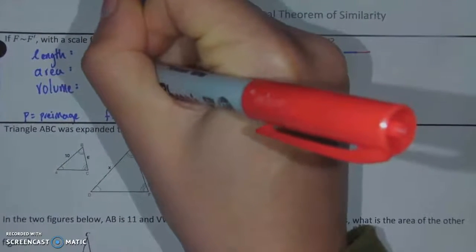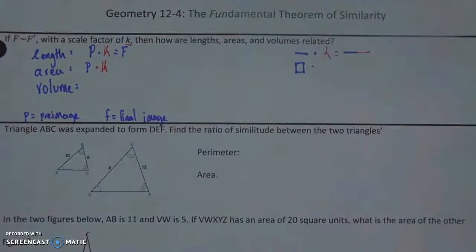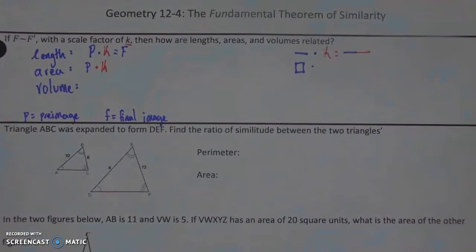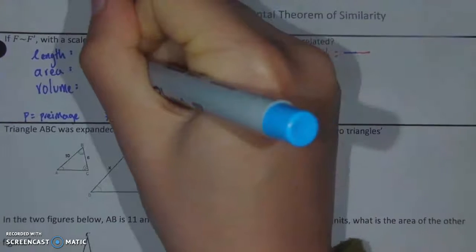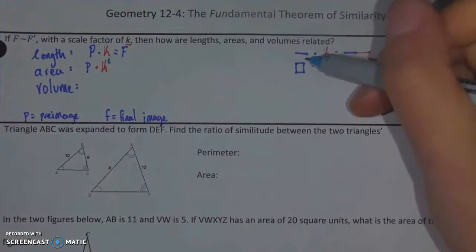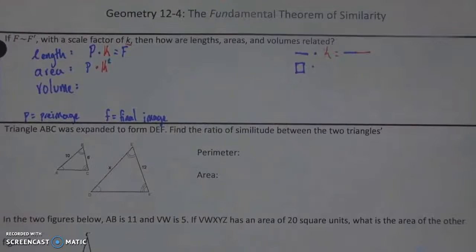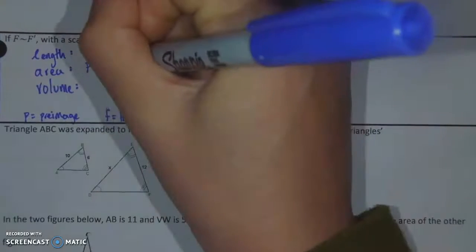That means that when I multiply by my size change, I can't just multiply by my size change. I need to multiply by my size change squared because I need to change it not just in one dimension, but in two dimensions. And that will give me my new final area.